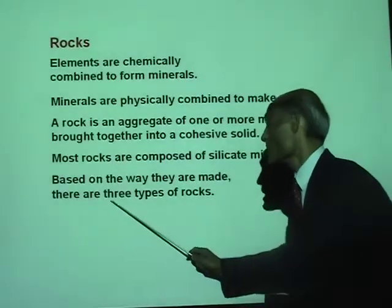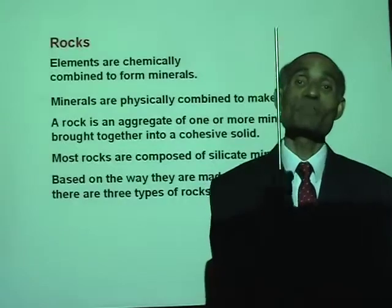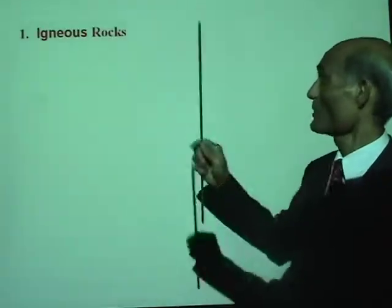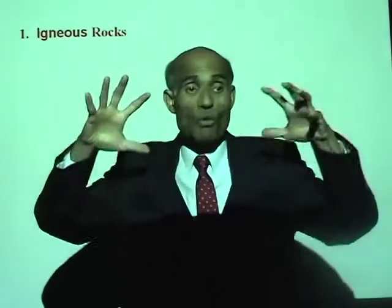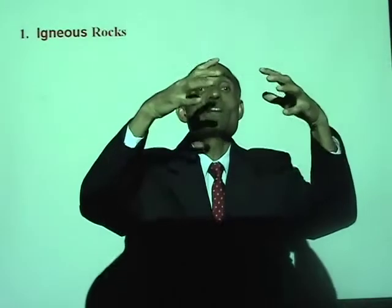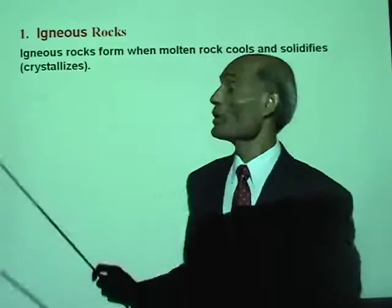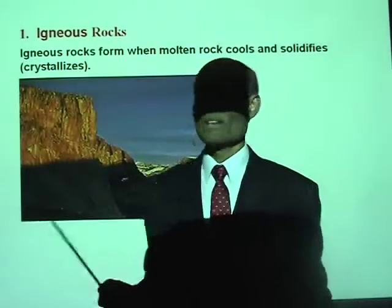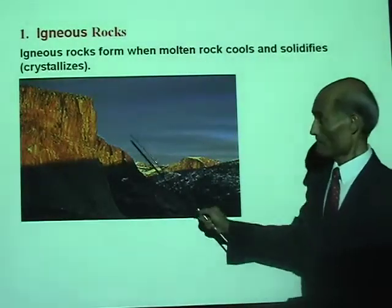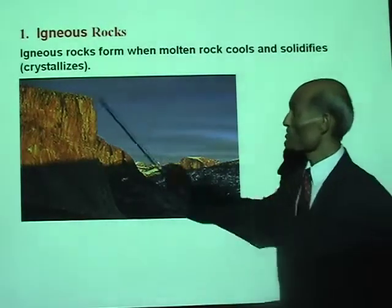Based on the way they are made, there are three types of rocks. The first type is called igneous rocks. Igneous rocks are the original rocks — the molten lava that comes from the interior of the Earth when it solidifies becomes rock. Igneous rocks form when molten rock cools, solidifies, and crystallizes. Here you have an example of an igneous rock — a beautiful solidified lava, brought from underneath the Earth.